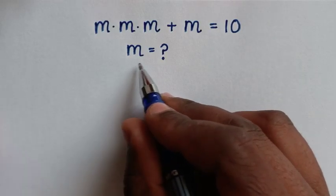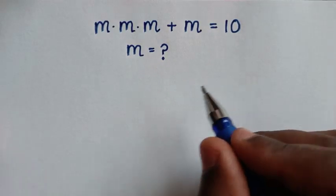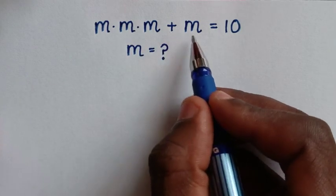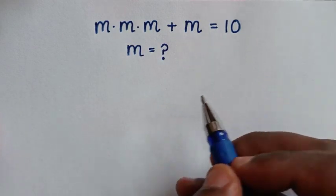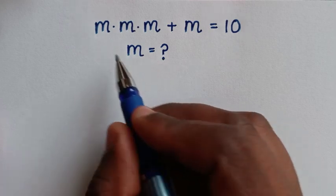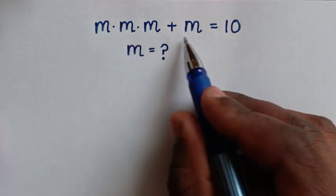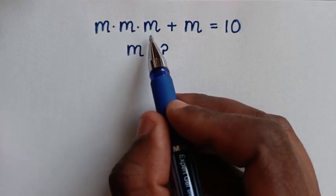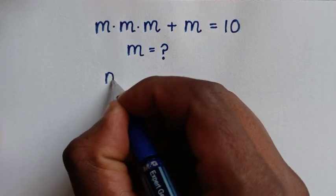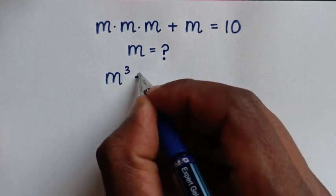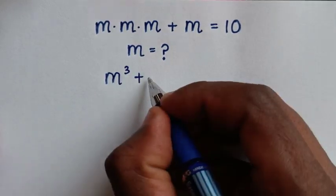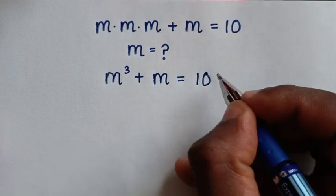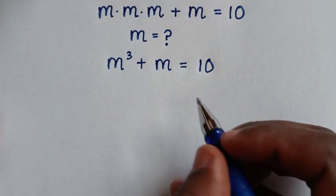Welcome. Solve this math problem: m times m times m plus m is equal to 10. Find the values of m from this equation. From here, m times m times m is m to the power of 3, then plus m is equal to 10.